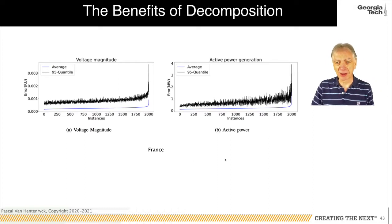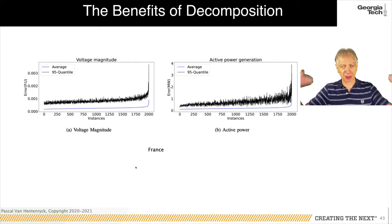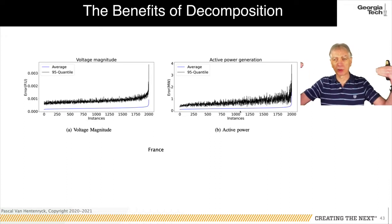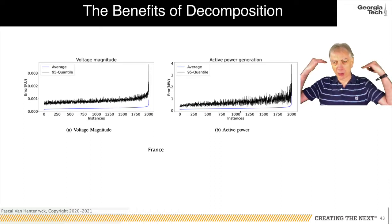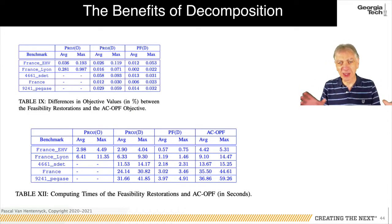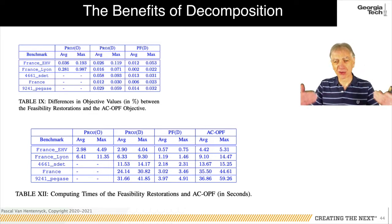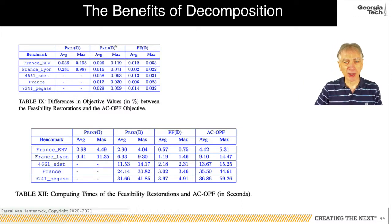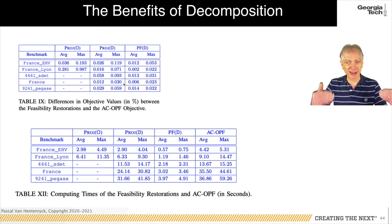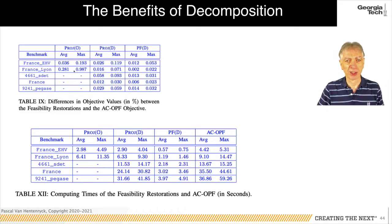Computing time results show that prediction plus feasibility restoration takes about three seconds for the French network on average, compared to about 35 seconds for the ACOPF — an order-of-magnitude advantage. The tutorial now turns to a missing piece: the real-time OPF is part of a larger market clearing pipeline starting from the day-ahead unit commitment, refined every 15 minutes in the look-ahead commitment. This is illustrated in the context of MISO's Security Constraint Economic Dispatch.